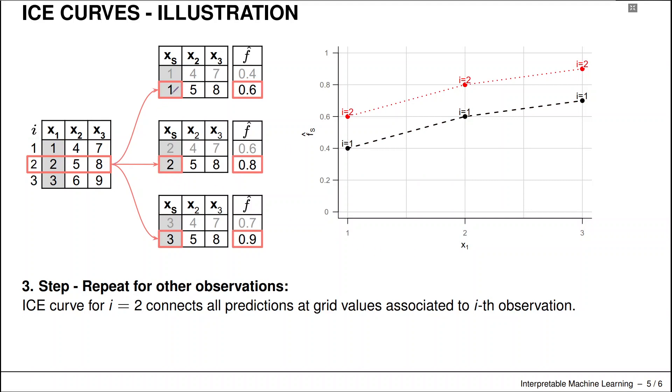We plug in 1, 2, and 3—the grid values into the first component of our feature vector—and compute the prediction. There's no extra marginalization or averaging going on.